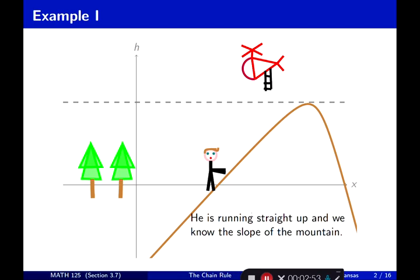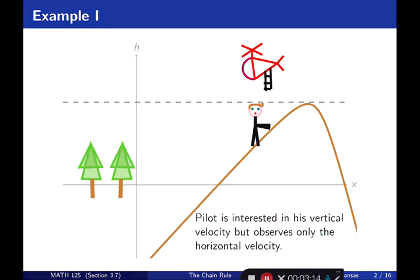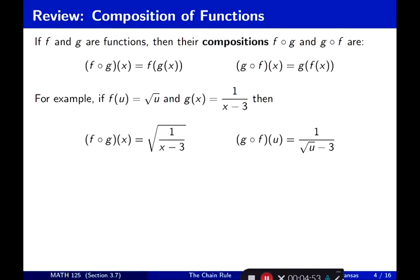The pilot knows how fast Albert is running horizontally, and he also knows the slope of the mountain. That helps him figure out how fast Albert is running upward. Now we want to talk about an iclicker question from this story and review composition of functions.